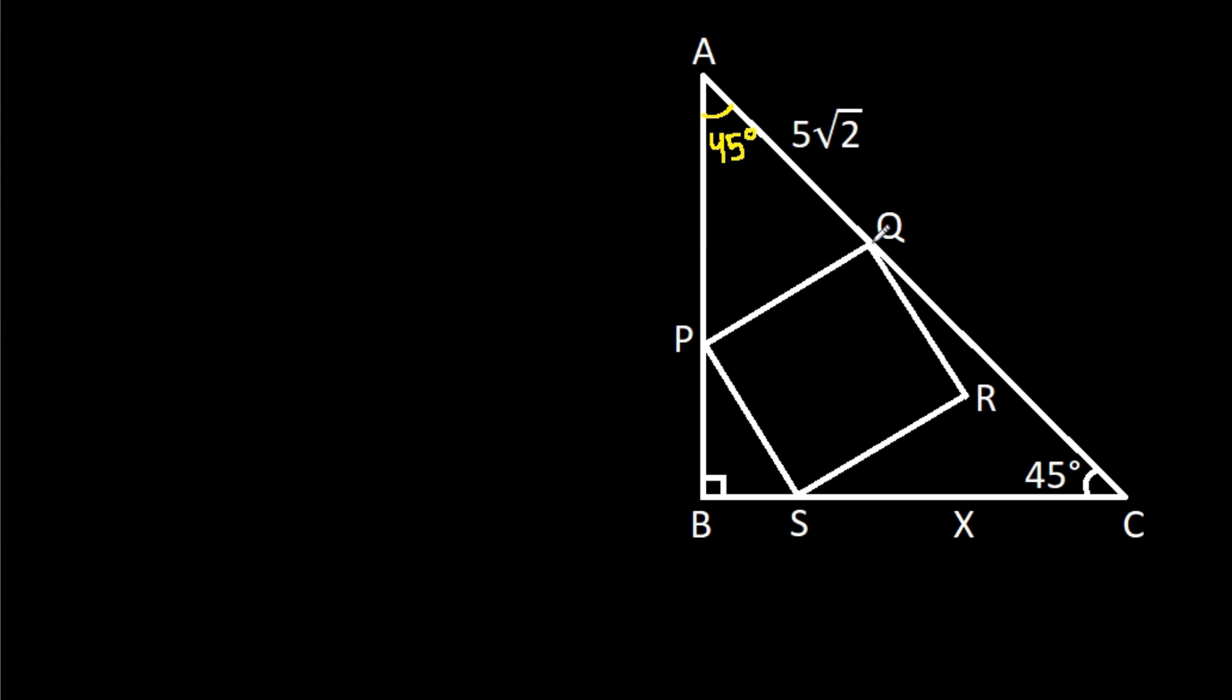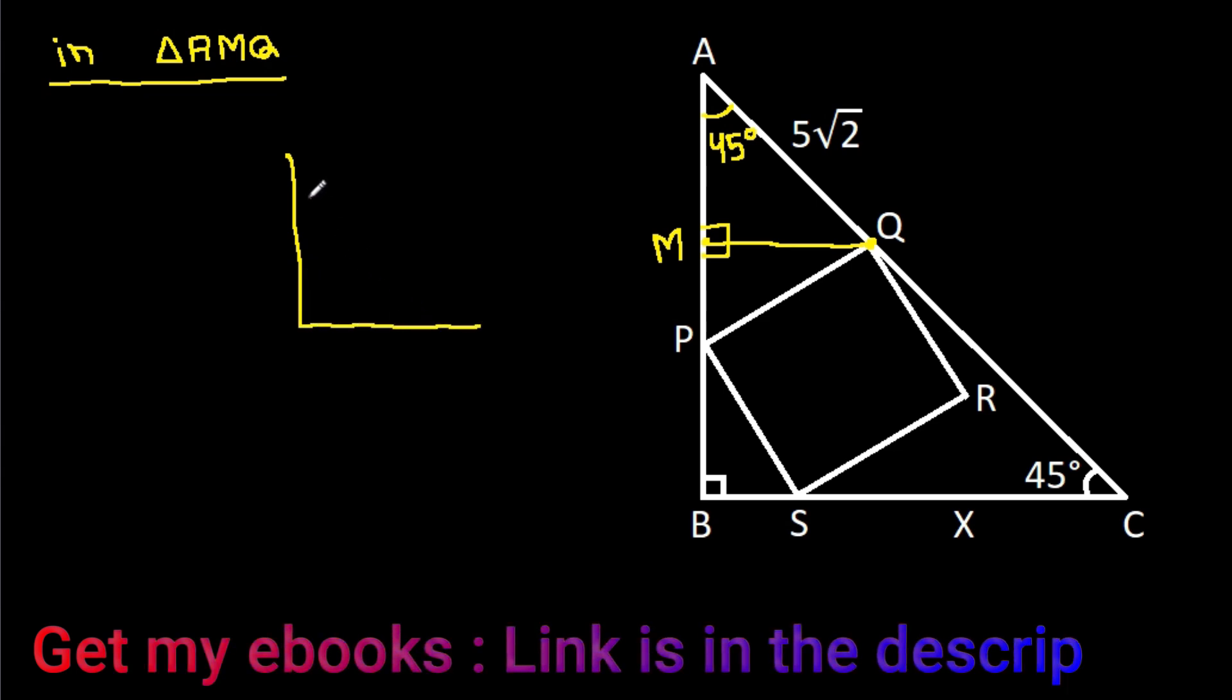Now, from point Q, if we make a perpendicular on AB, suppose this point is M, then in triangle AMQ, this angle is 90 degrees, this angle is 45 degrees, and AQ is 5 root 2.